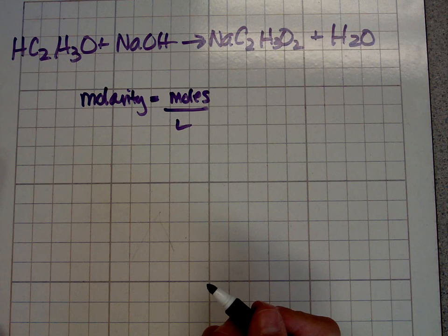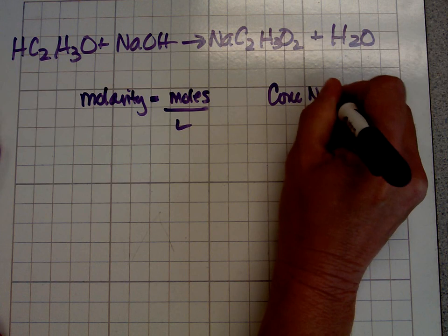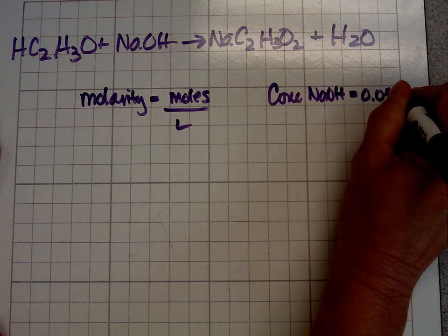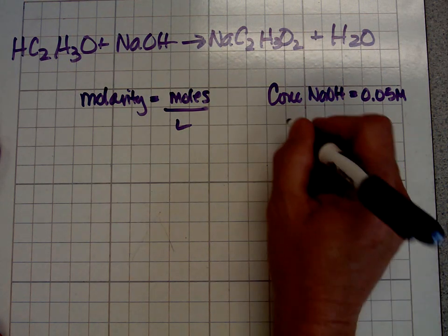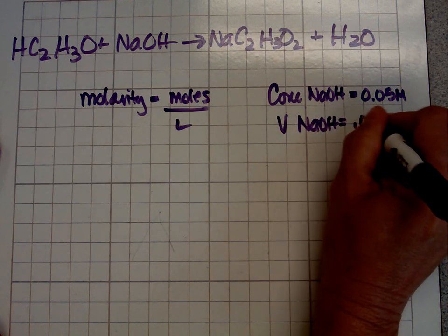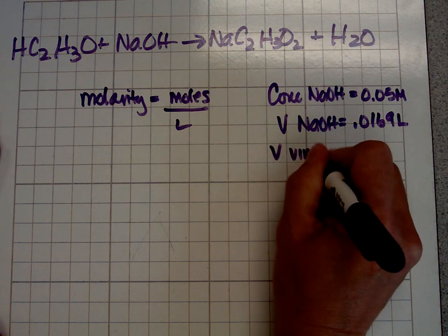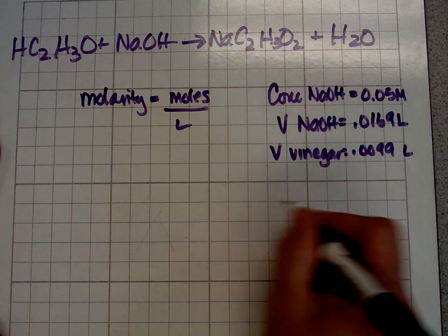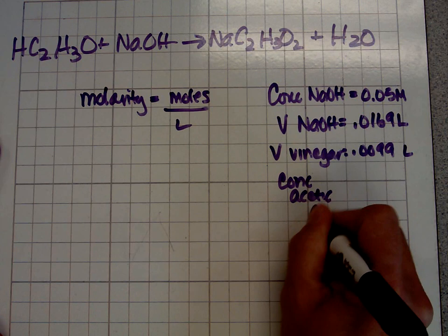So let's try and figure out what we know. First of all, we know the concentration of sodium hydroxide. That was on the bottle that you used, and it's 0.05 molar, which means it's 0.05 moles for one liter. The volume of sodium hydroxide used was 0.0169 liters. The volume of vinegar is 0.0099 liters, and the concentration of acetic acid is what we're trying to calculate.